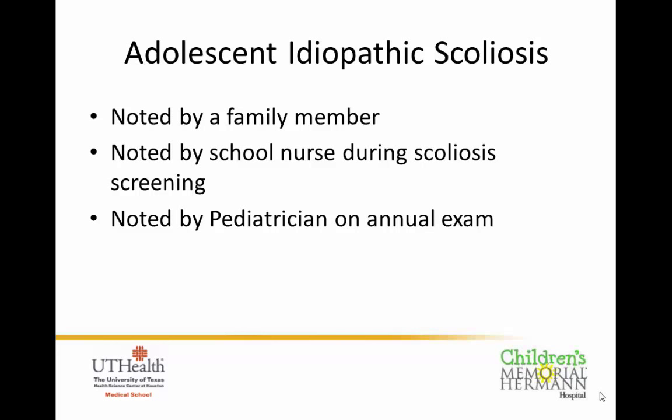Patients typically come to clinic in three ways: a parent or family member notices an asymmetry; school nurses identify a concern for spinal curvature during scoliosis screening and refer for evaluation; or the pediatrician notices a spinal curvature on the annual exam and sends the patient for further evaluation.